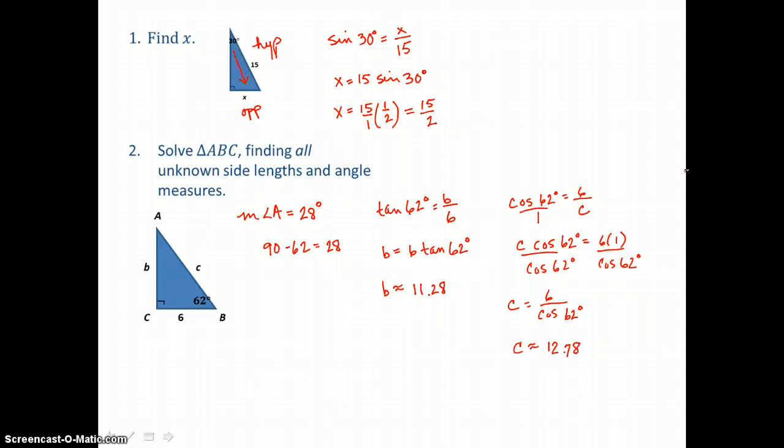We've solved triangle ABC — we knew three measures and found the missing three.